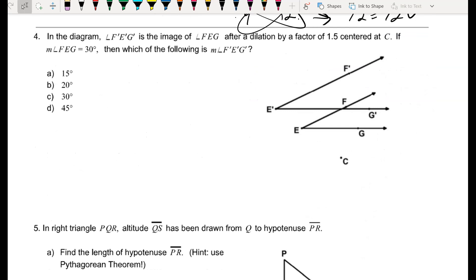Number 4. In the diagram, angle F prime E prime G prime is the image of angle FEG after a dilation by a scale factor of 1.5, centered at C. If the measure of angle FEG is 30 degrees, which of the following is the measure of F prime E prime G prime? Well, this one's actually a slam dunk, because if you remember a property of dilations, dilations don't preserve distance, but they do preserve angle measure. So if I dilate an angle that's 30 degrees, it's going to create another angle that's again 30 degrees.